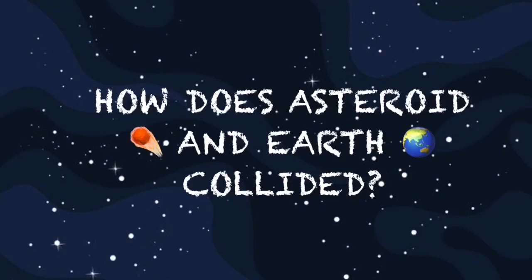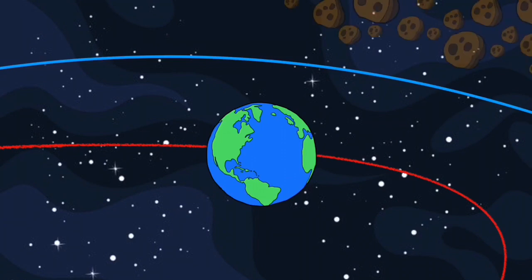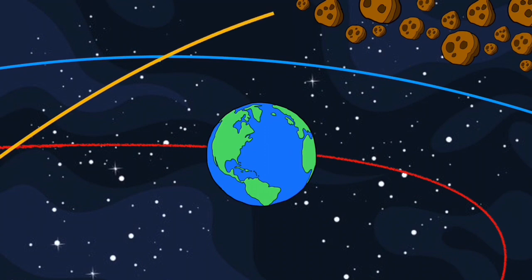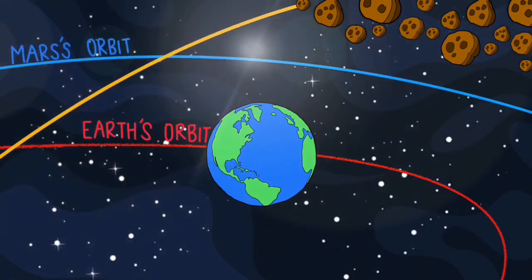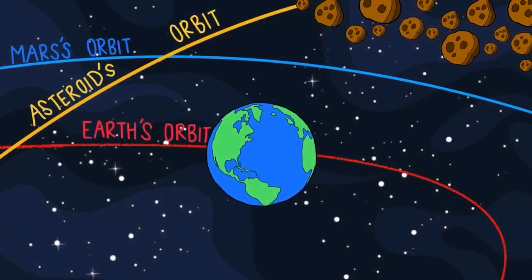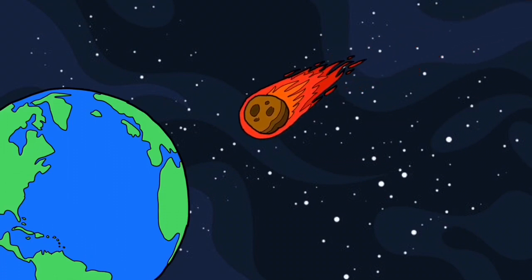How do asteroids and Earth collide? It happens when the asteroid's orbit intersects with Earth's orbit. When the Earth and asteroid arrive at the intersecting line, they collide. This is the process of collisions.